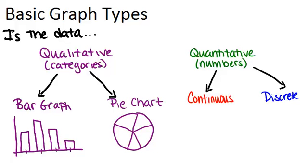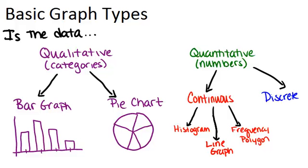If the data is continuous, you have three choices. You can make a histogram, a frequency polygon, which is sort of the same thing, or a line graph. Remember that a histogram is sort of like a bar graph except for continuous quantitative data, so all the bars are touching.